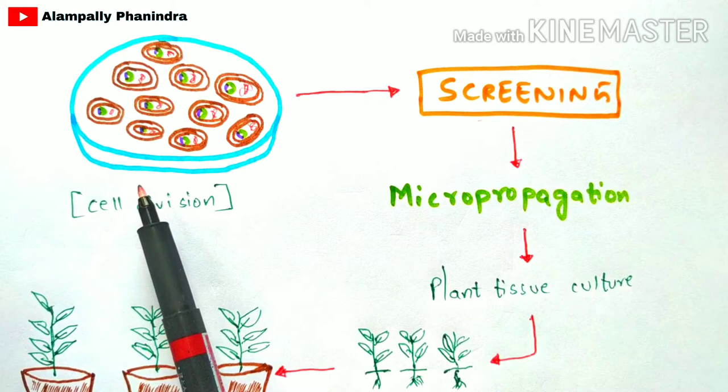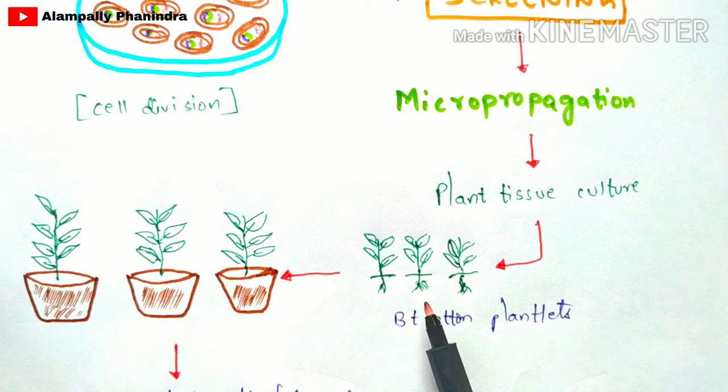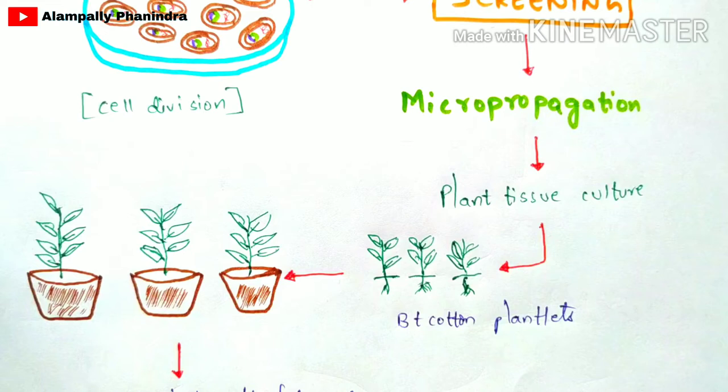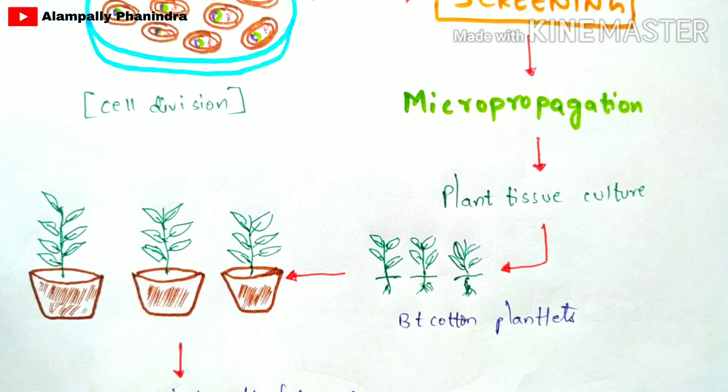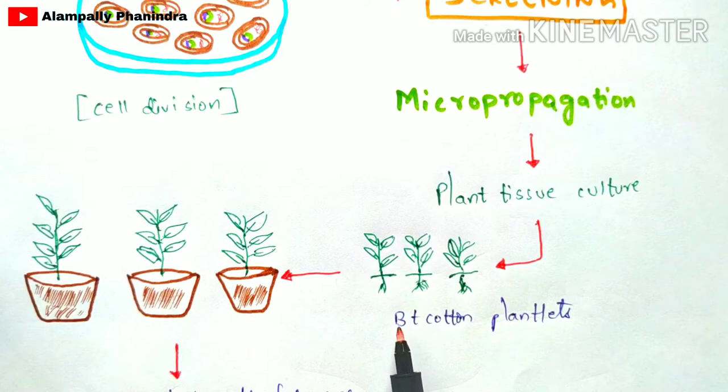All of these cells undergo screening and micropropagation, and then a plant tissue culture technique is performed so that small plantlets are generated from these cells. I have already explained plant tissue culture in previous videos, and the playlist link will be given in the description box. The plantlets produced are BT cotton plantlets because these plants contain the cry gene from Bacillus thuringiensis.